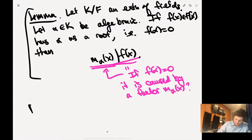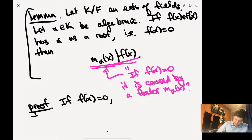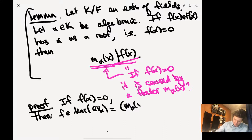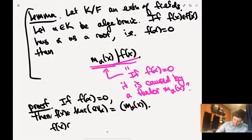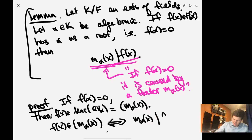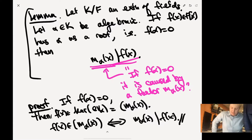Proof: If F(alpha) = 0, then F is in the kernel of evaluation at alpha, and this kernel is generated by M_alpha(x). So F(x) is an element of the ideal generated by M_alpha(x) if and only if M_alpha(x) divides F(x). That's what it means to be in this principal ideal.